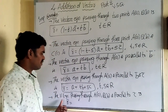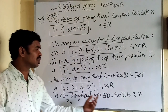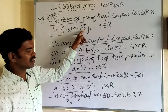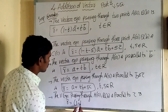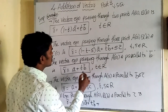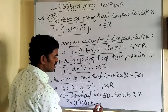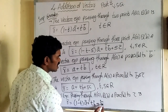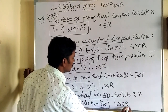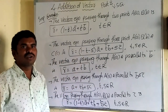Fifth concept: the vector equation passing through two points A(a) and B(b) and parallel to vector c̄ is r̄ = (1 − t)ā + tb̄ + sc̄, where t, s belong to real numbers. These are the important key points. Let us see how to apply these formulas in very short questions.